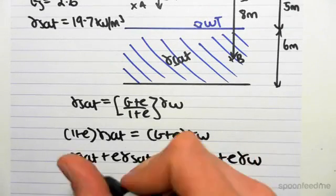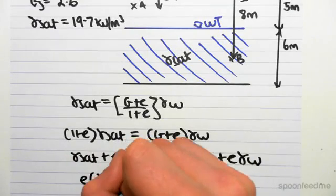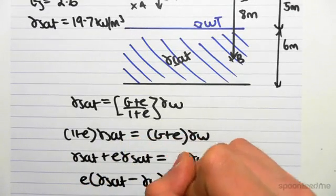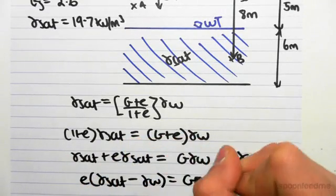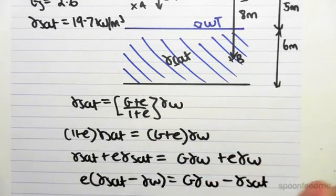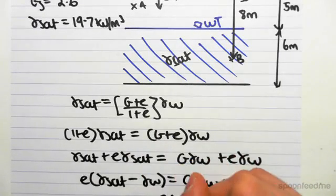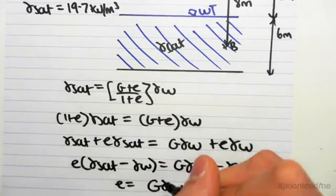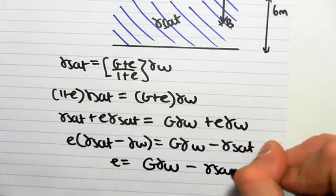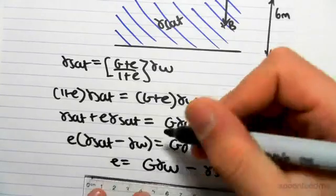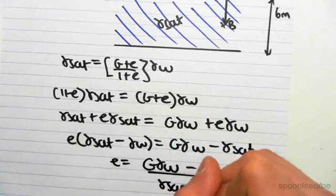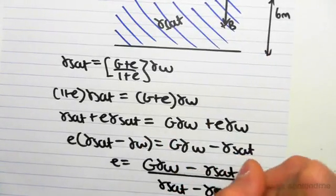Let's put all the E's on one side. We get E × (gamma sat − gamma W) equals G × gamma W − gamma sat. And we can finally get E equals (G × gamma W − gamma sat) / (gamma sat − gamma W).